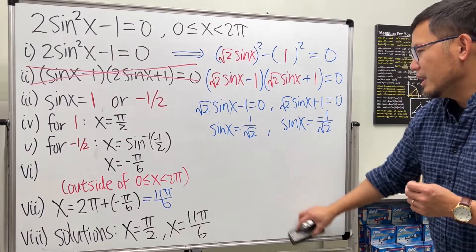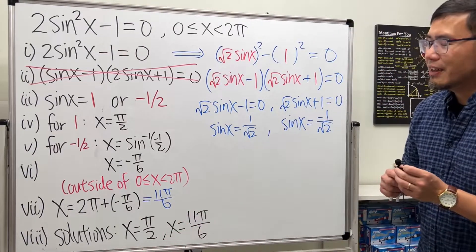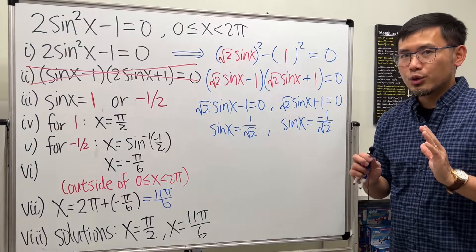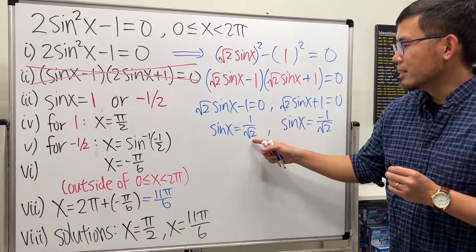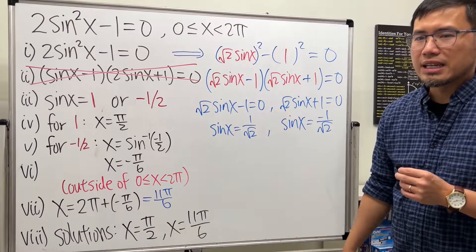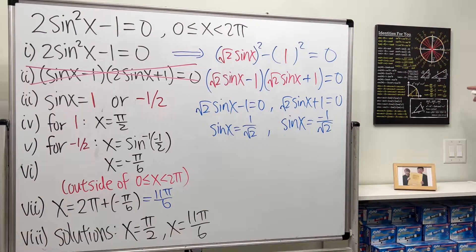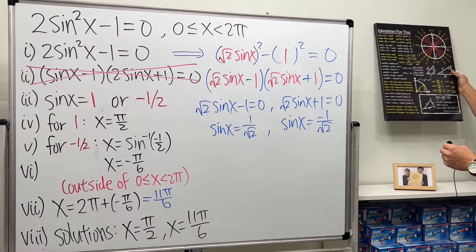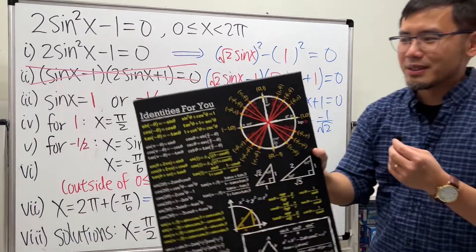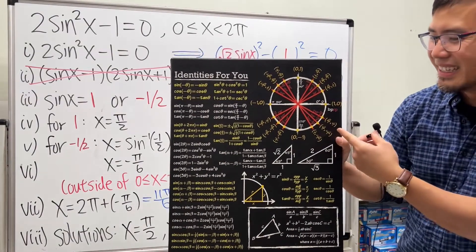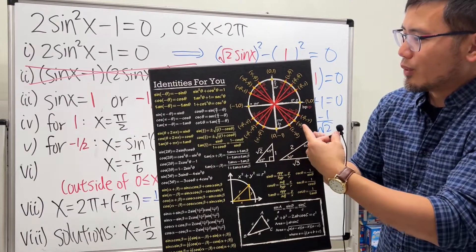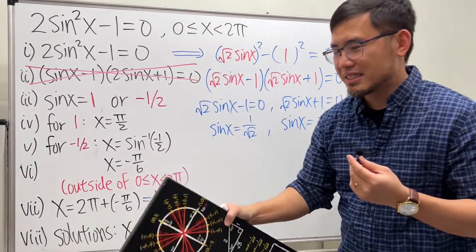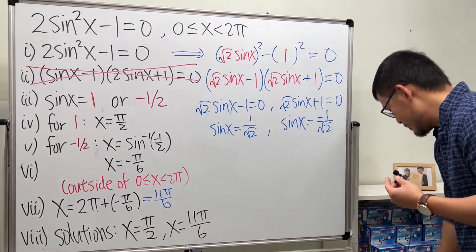And the truth is, if you want to solve this equation, unfortunately, the answer is not going to be exact. Sine of x is equal to 1 over square root of 2. You don't get an exact answer. You can see that — let's show you guys the unit circle. You can see that the y-value here for sine is never equal to 1 over square root of 2. It's not an exact value answer right here.